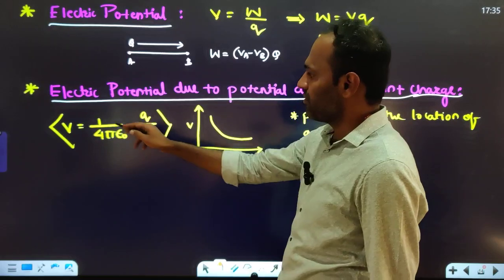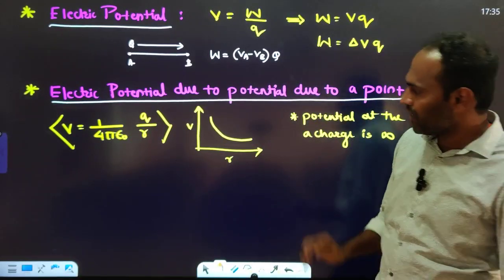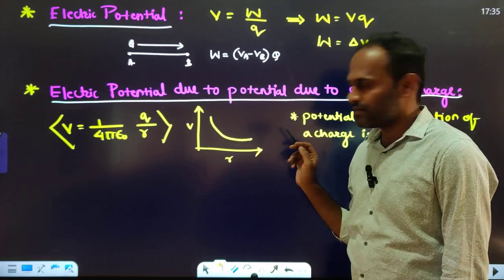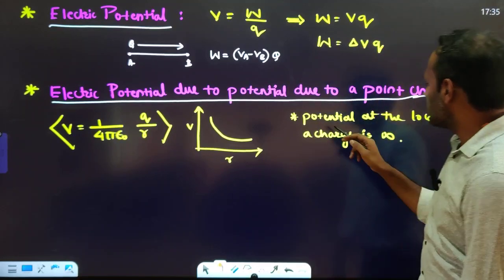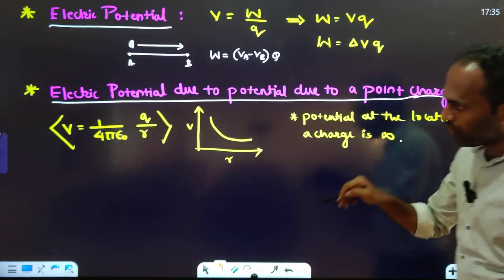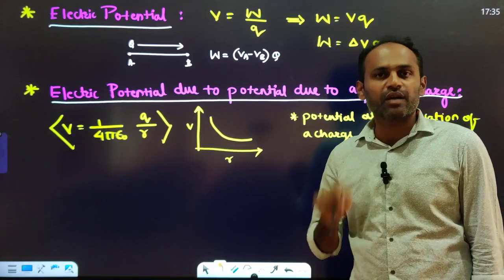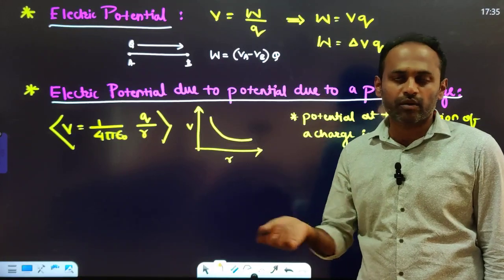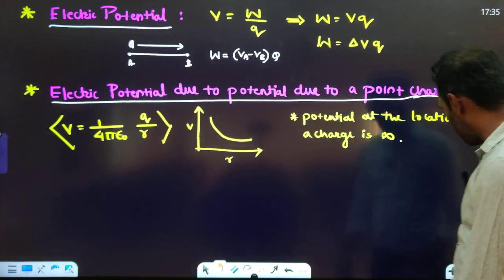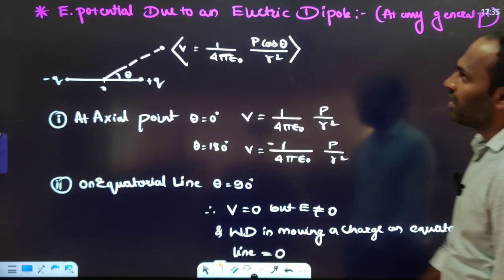Electric potential due to a point charge is given by V = (1/4πε₀) × Q/R. The potential goes on reducing with respect to R. At the location of the point charge, the electric potential will be infinite. This is the formula for electric potential due to a point charge.